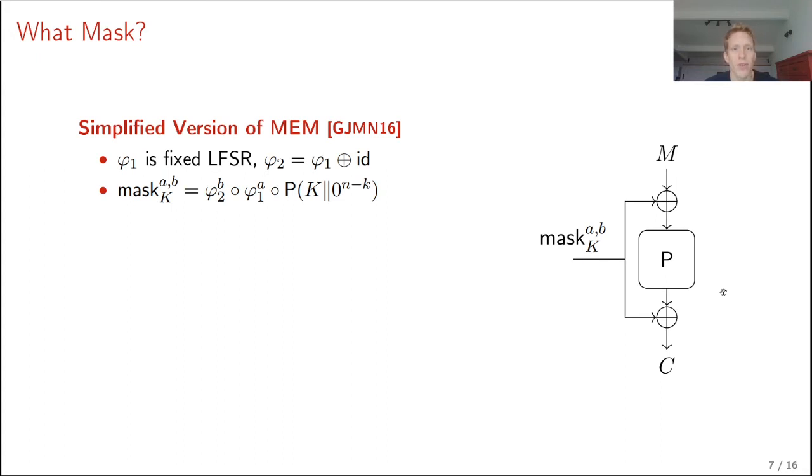For the masking, we use a simplified version of the masked Even-Mansur construction of Granger et al. The idea is that you take a fixed LFSR phi1. You define phi2 to be phi1 plus the identity. And then the masking gets its input, the key, and two counters A and B. And the masking operates as follows. So first you compute a subkey basically from the key. So the key is appended with zeros and then permuted. And then you evaluate phi1 to the A, phi2 to the B. And A and B are counters that will be used actually to indicate the location of the masking in the scheme. I will come back to this later. First about this masking, the advantage of this masking is that it's constant time. It's very efficient and it's very simple to implement. It's more efficient than the alternatives.